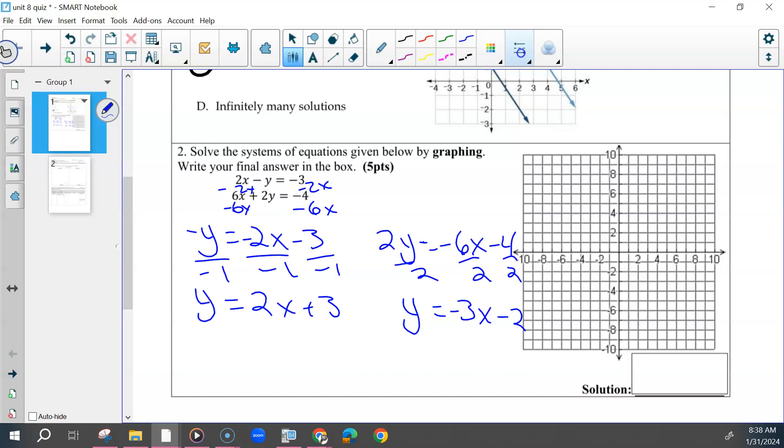And then graph both. So this first one would have started at positive 3, had a positive slope up 2 to the right one as many times as possible, and down 2 to the left one as many times as possible.